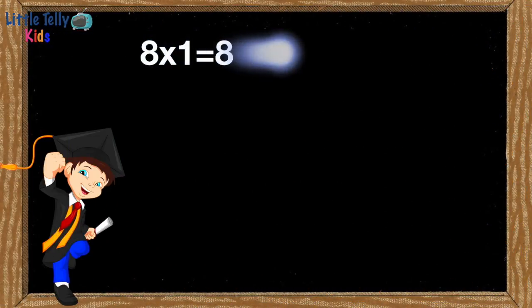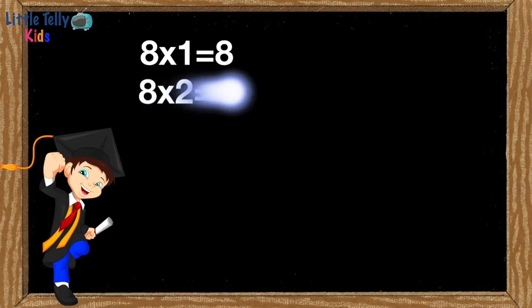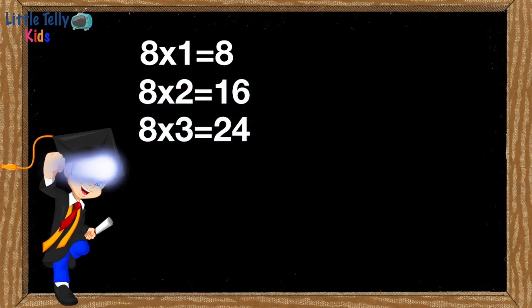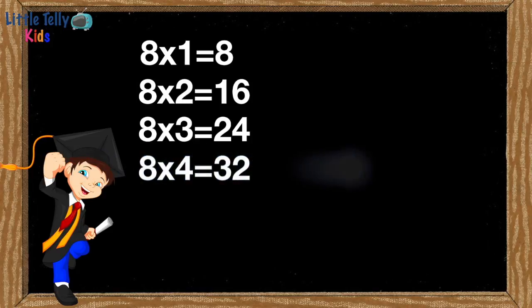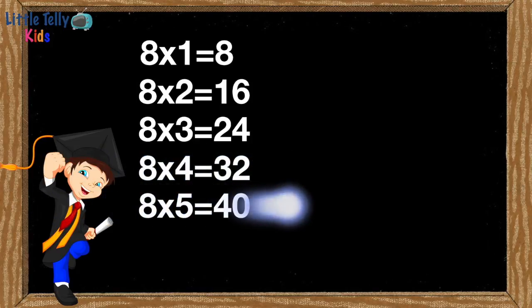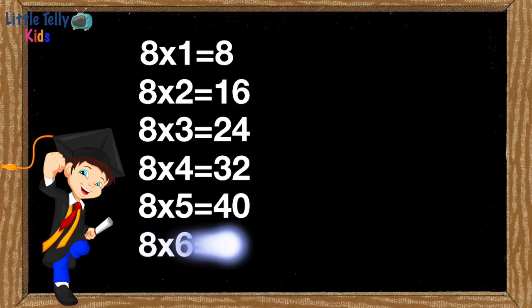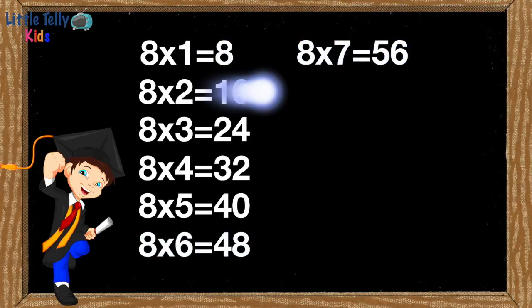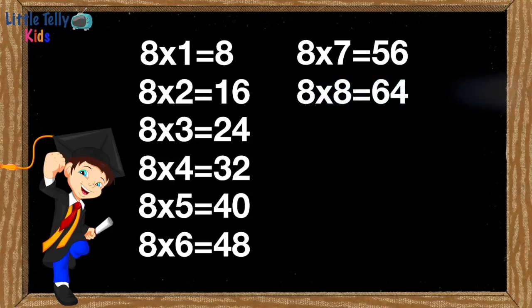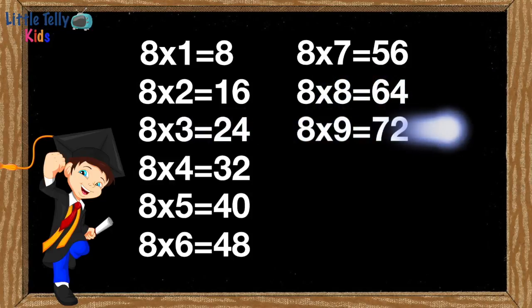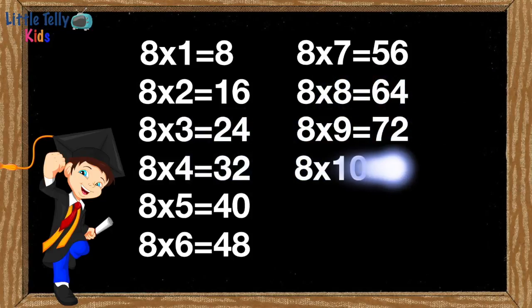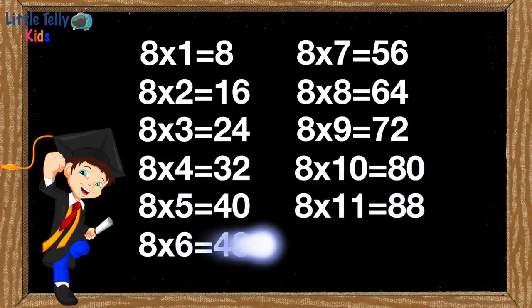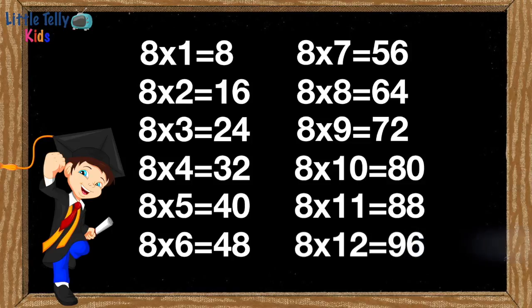Eight ones are eight, eight twos are sixteen, eight threes are twenty-four, eight fours are thirty-two, eight fives are forty, eight sixes are forty-eight, eight sevens are fifty-six, eight eights are sixty-four, eight nines are seventy-two, eight tens are eighty, eight elevens are eighty-eight, eight twelves are ninety-six.